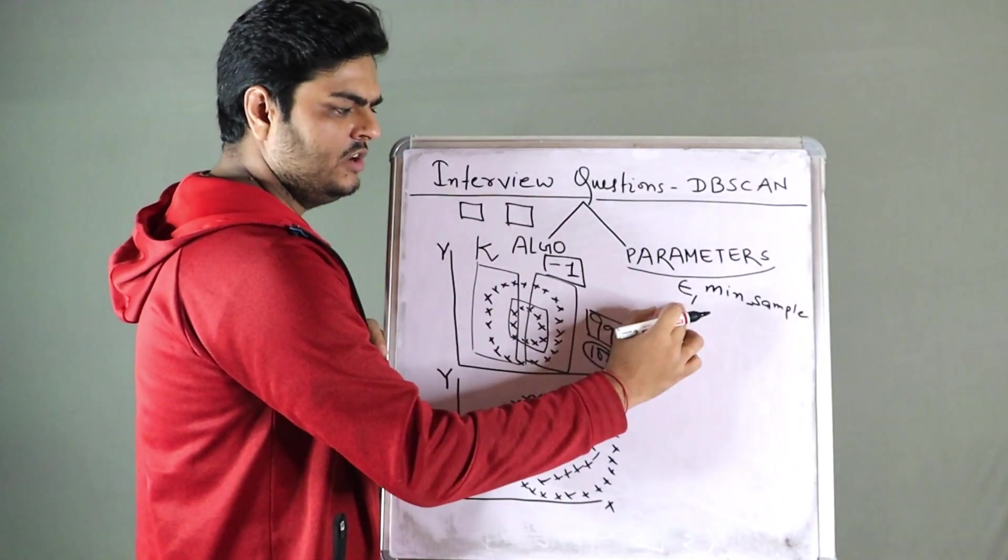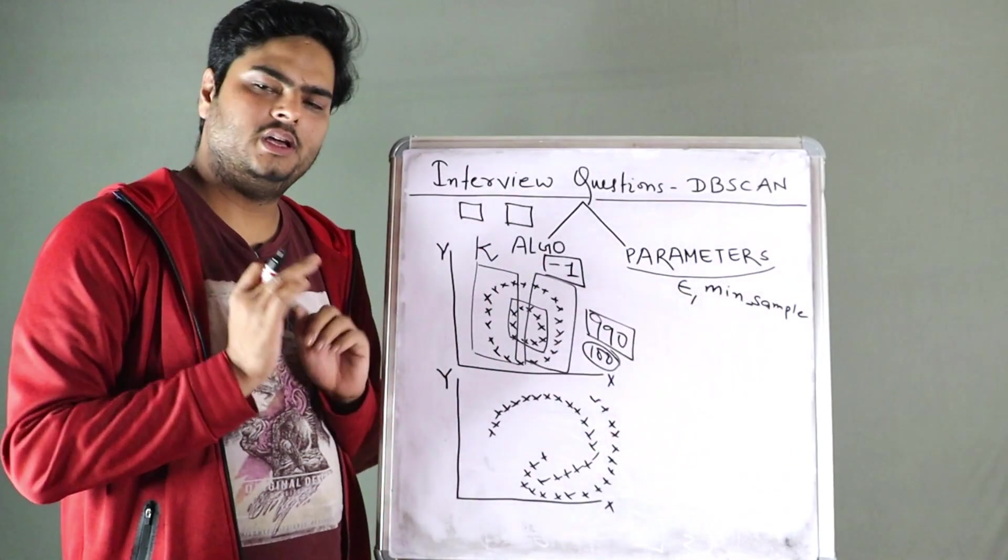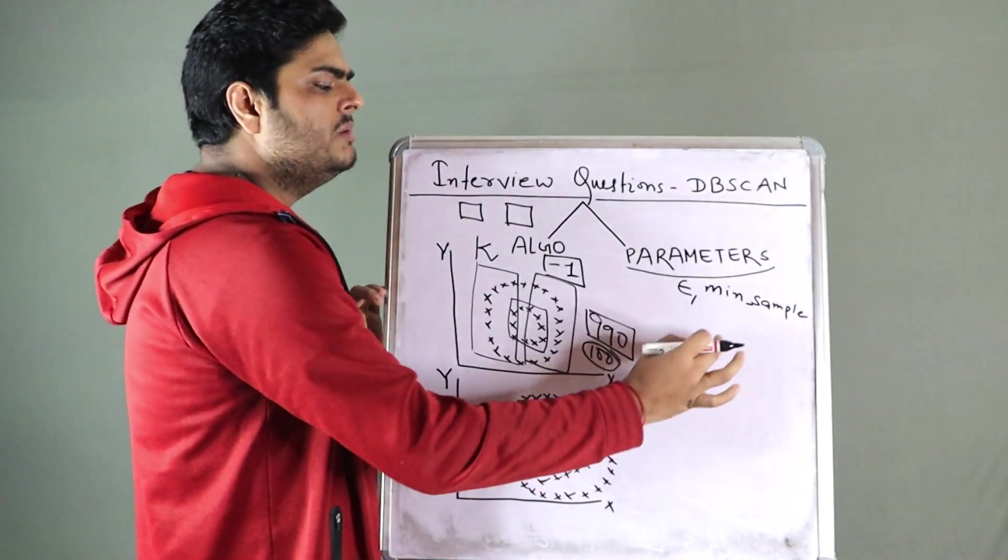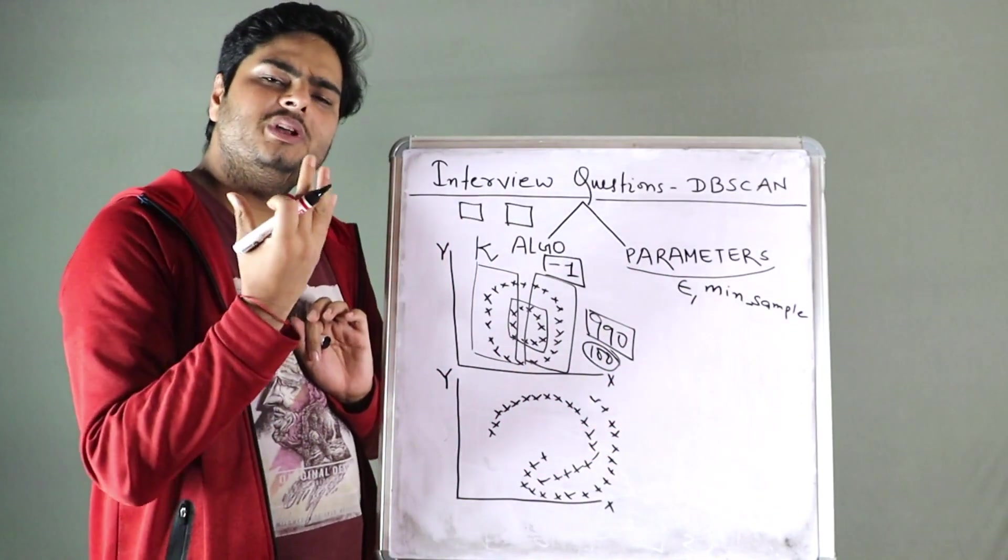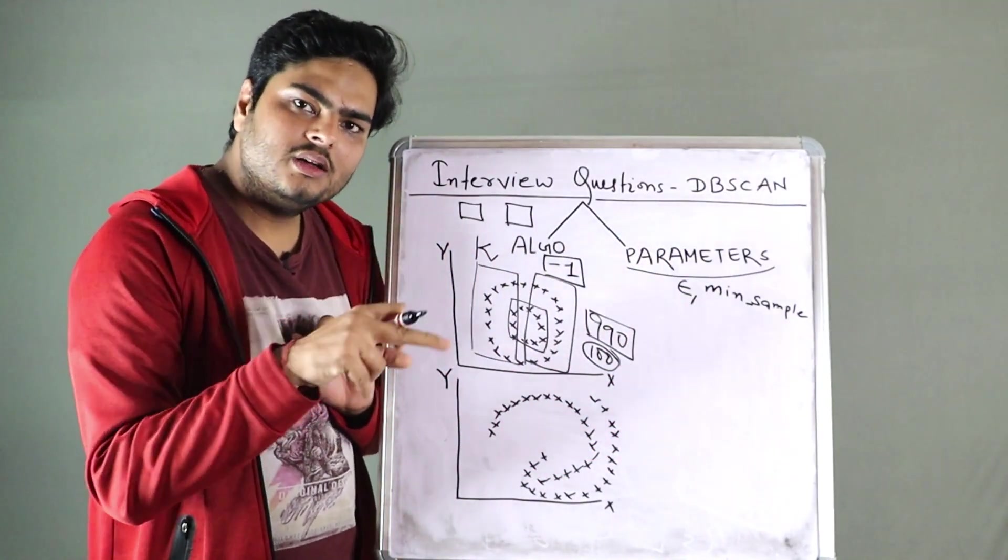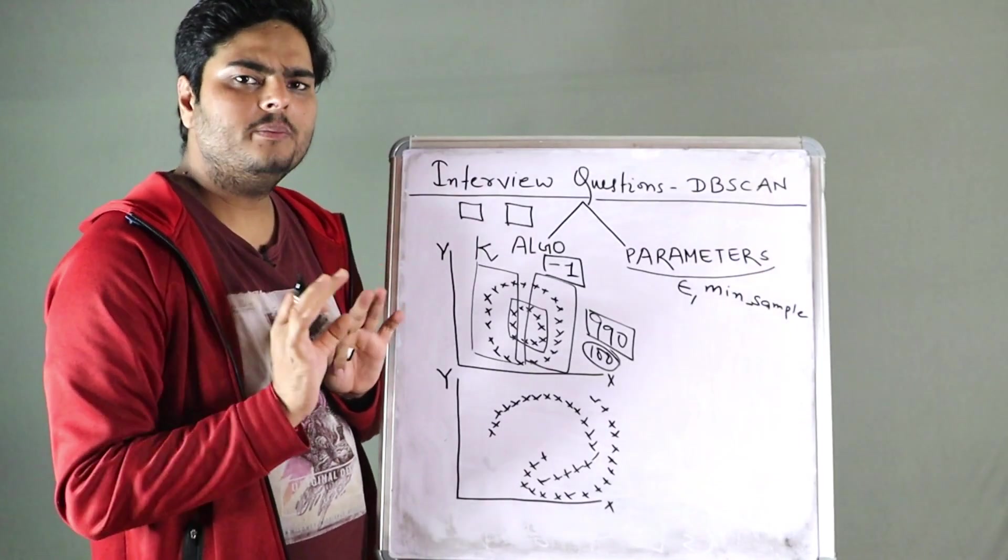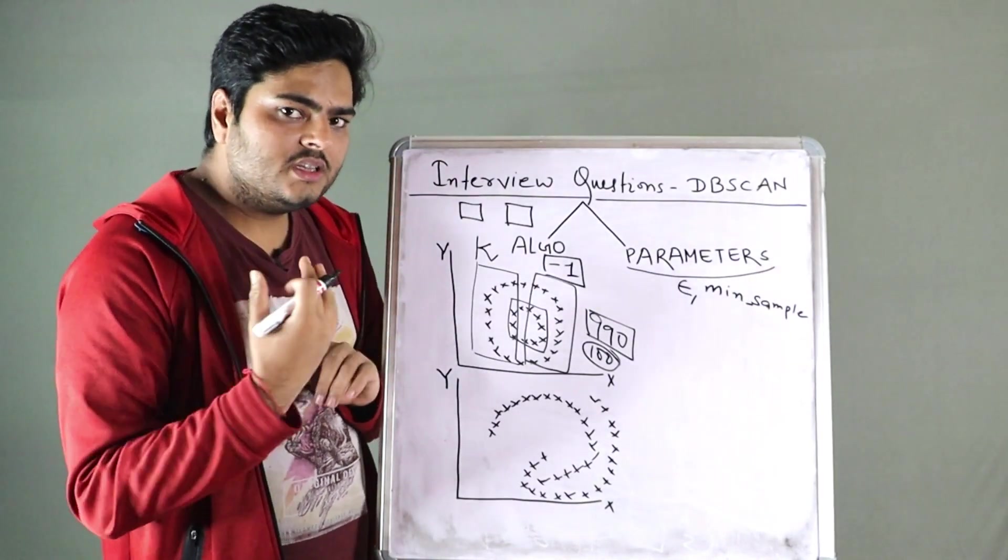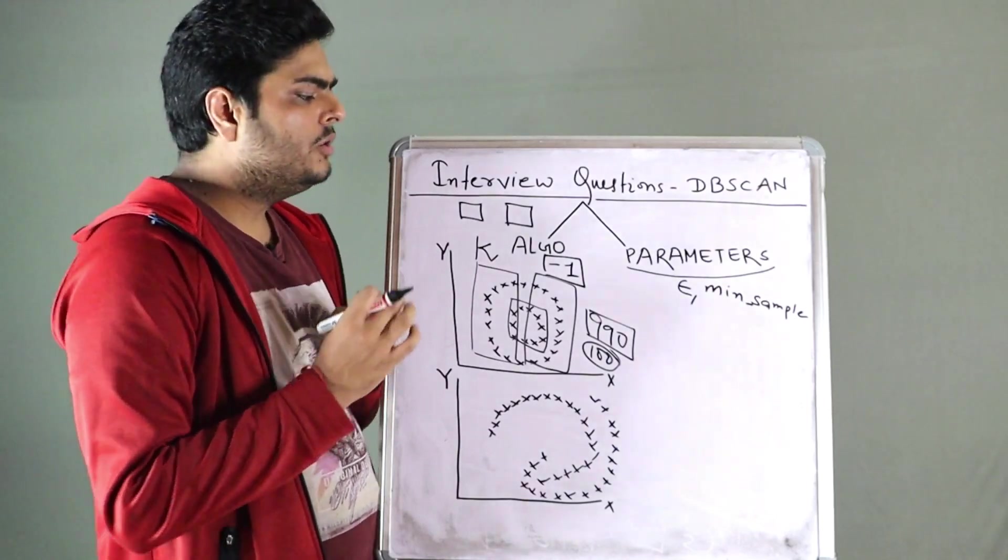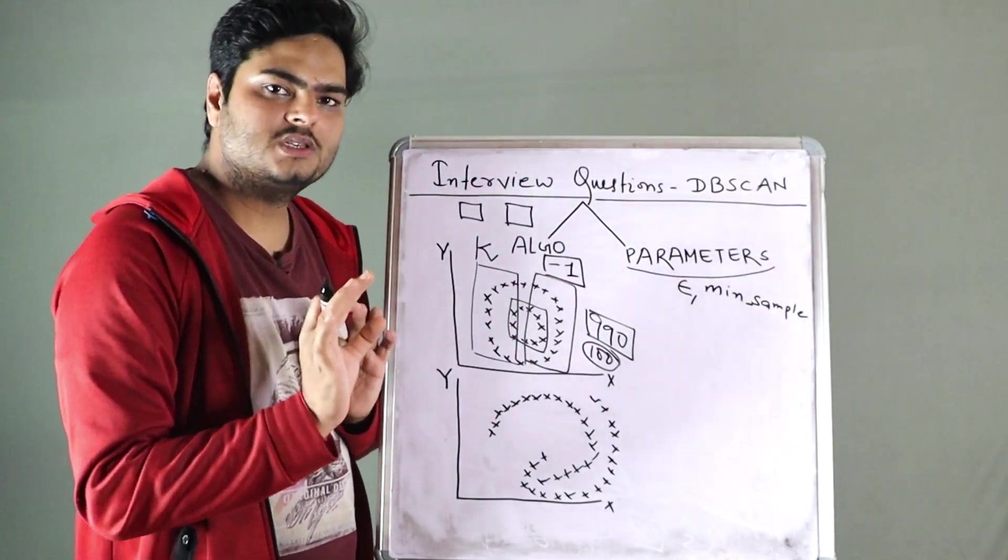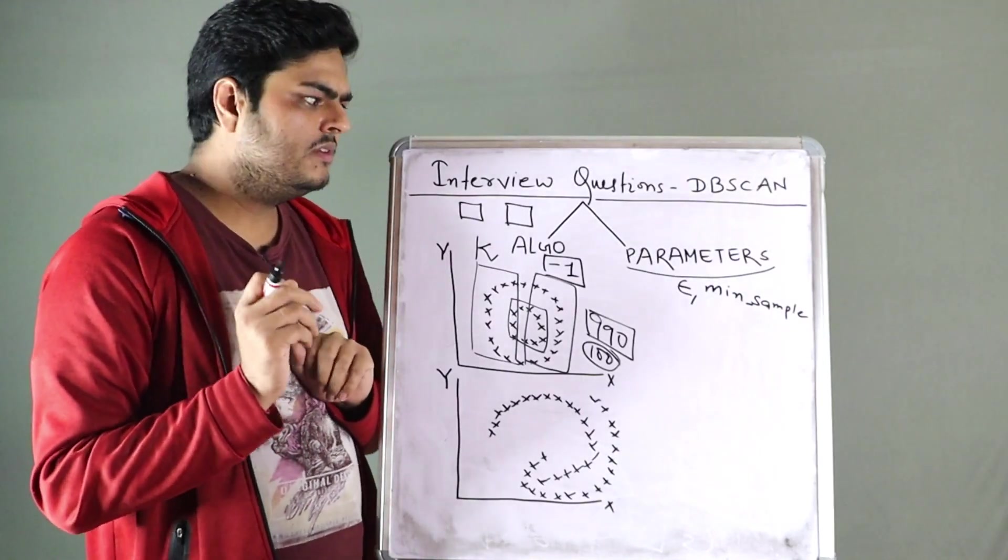Now the thing is, what is your understanding of epsilon and minimum sample, people will try to ask you. Epsilon is nothing but your definition of closeness. Minimum sample is nothing but how many samples you want to be called as one cluster, minimum, definition of core point. And next thing that interviewer will ask you is, how do you decide your epsilon and how do you decide your minimum number of samples?